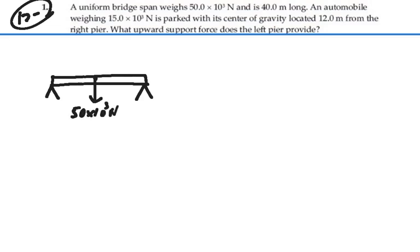We know that there's a car that is 12 meters away from the right pier and that has weight as well, and that weight is 15,000 newtons. We have a force of the left pier, a normal force going up. Let's call that F1. And then we have a force, a normal force at the right pier. Let's call that F2.